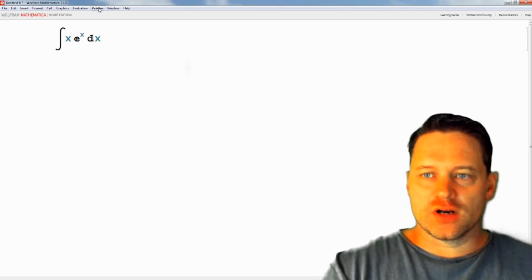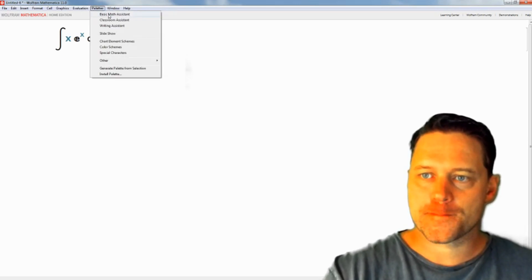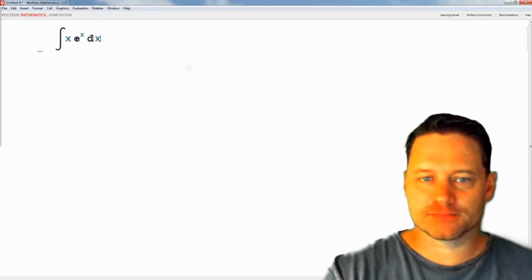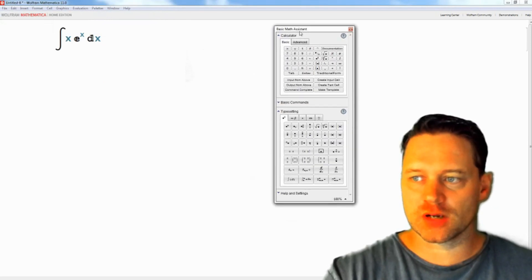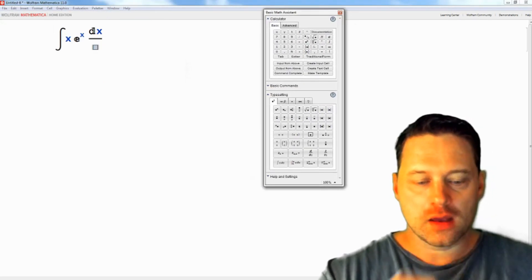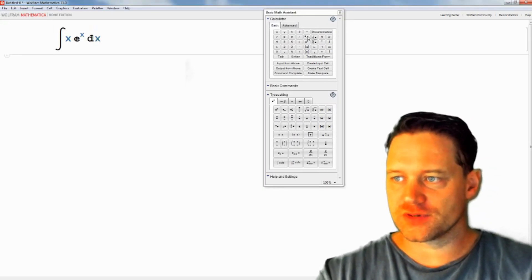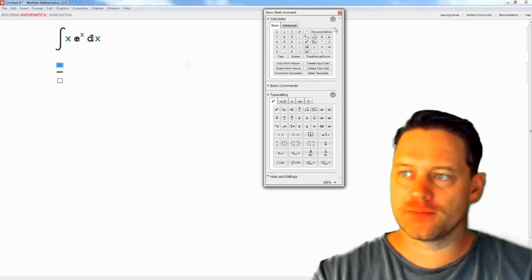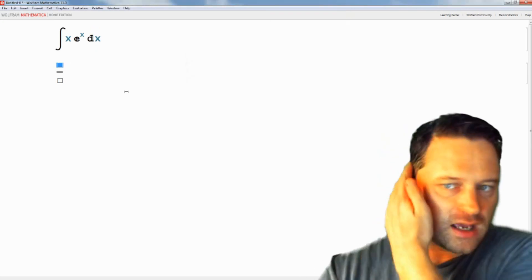So if I go and open up a palette, Basic Math Assistant, I'll show you what I'm doing. I'm just putting in a fraction. Whoops, I didn't want it there. I want to go into a new cell, put it right here.